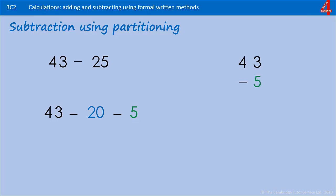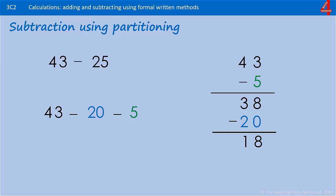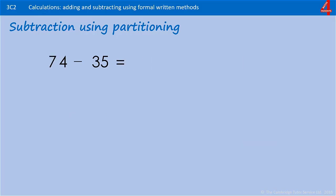So 43 take away 5 is 38, then take away the 20, which still gets you to 18. It depends on how your brain works and which way round you prefer to do things. Now, 74 take away 35 — this is one for you to try using partitioning.